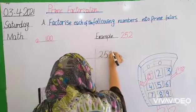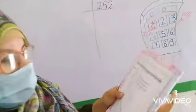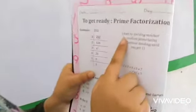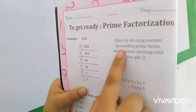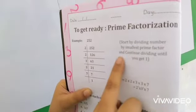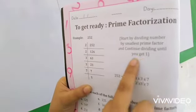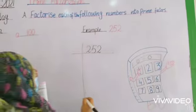Now students, look at your books. Start by dividing the number by the smallest prime factor and continue dividing until you get 1. Students, you have to divide it until you get 1.